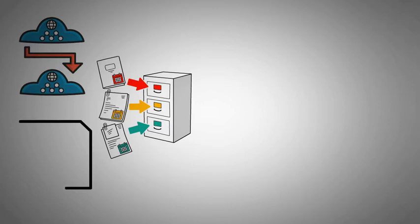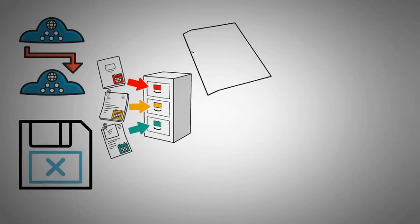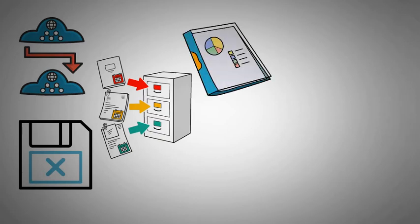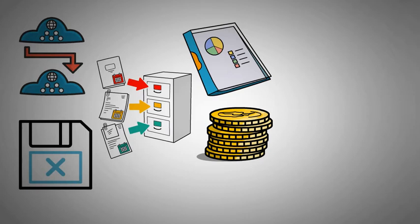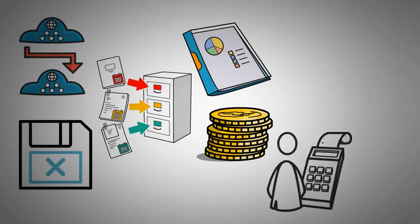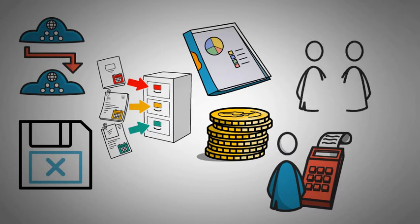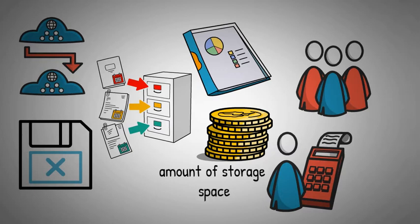Technically, what the MimbleWimble Protocol does is that it hides the transaction fields that contain the public address of the sender and the receiver, as well as the amount made of that transaction. In contrast, on the Bitcoin network, each of that information is registered within the blockchain individually. But when the information is grouped as a single set of data, the network saves a significant amount of storage space.